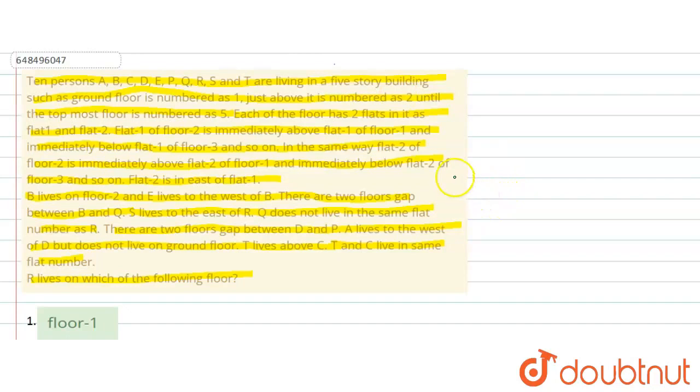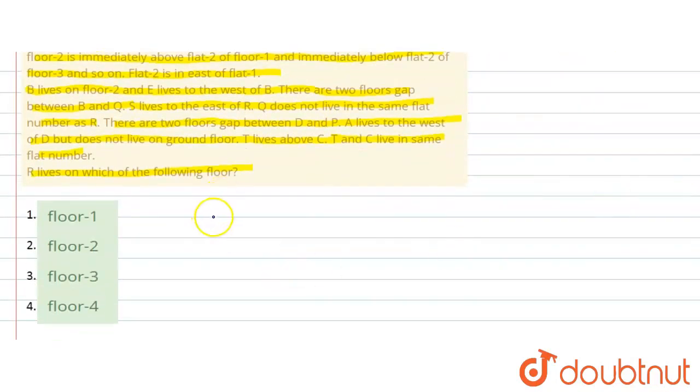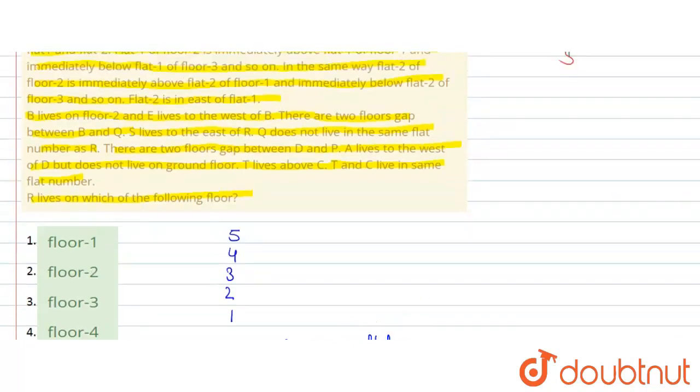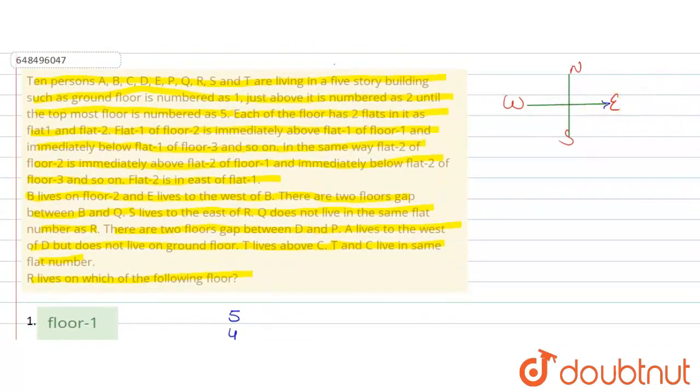So, there are 5 floors given here. First of all, we need to know the directions. There are 4 directions - this is west, this is east, this is north and this is south. We have 5 floors, so let's take numbering for 5 floors. So, 5, 4, 3, 2 and 1. Here we have flat 1 and here will be flat 2. Because flat 2 is in the east of flat 1, so east direction is this way.